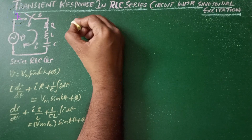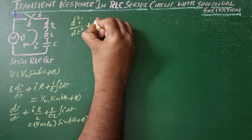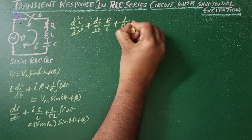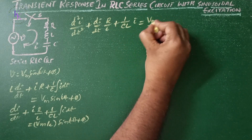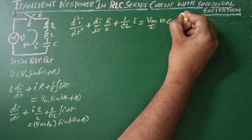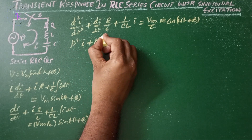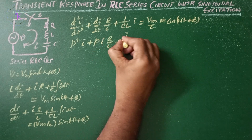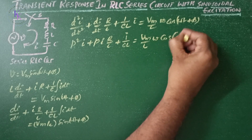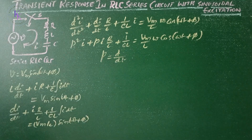Differentiating this equation gives: d²i/dt² + (R/L)·di/dt + (1/CL)·i = (Vm/L)·ω·cos(ωt + φ). This can be written in operator form as: p²i + p·(R/L)·i + i/(CL) = (Vm·ω/L)·cos(ωt + φ), where p = d/dt.